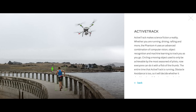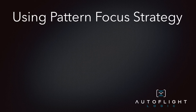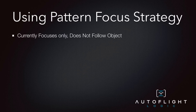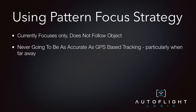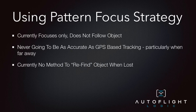Before we get started, let's cover what pattern focus strategy provides and some basic things you'll need to know. First, the pattern focus strategy can only focus on an object — it does not follow or allow an orbit around the object. Second, pattern mode is never going to be as accurate as GPS tracking, particularly when the object is far away from the quadcopter. Third, if Autopilot loses the object, there is currently no method to re-find it when lost — you'll need to re-select that focused object again.